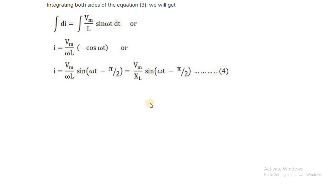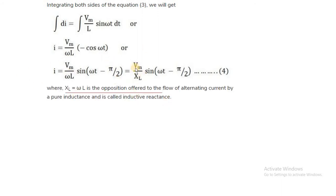XL is the term which we have replaced for omega L. Omega L equals 2 pi f L, where omega equals 2 pi f. This quantity 2 pi f L, denoted by XL, is nothing but the opposition offered to the flow of alternating current by a pure inductance circuit. As this opposition is offered by a pure inductor, it is called the inductive reactance.